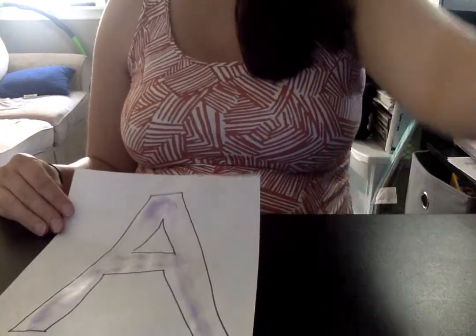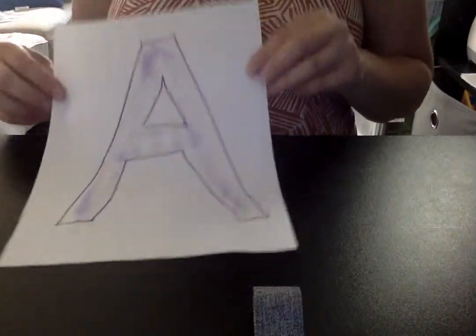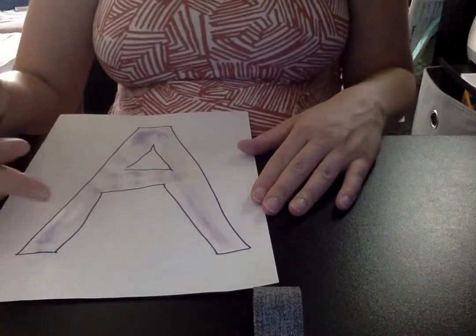So while you're doing this you want to ask them questions such as, oh what letter are we doing? You know even an A you can be like, oh what shape does an A look like? It looks like a triangle. Then you want to have them pick up their pieces.